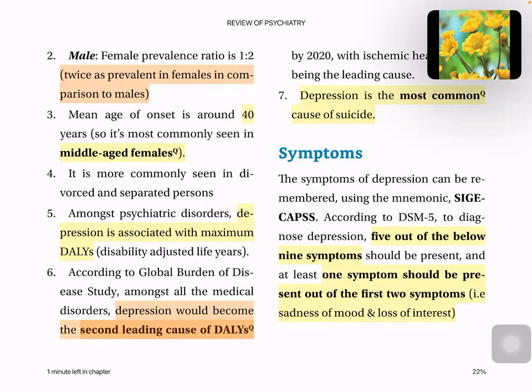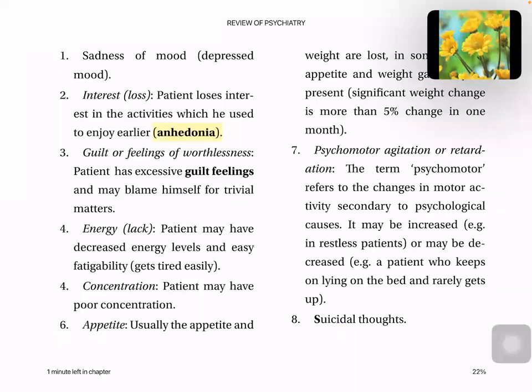Now we come to the symptoms. We have the mnemonic SIG E CAPS. According to this, five symptoms must be present, and at least one of the first two symptoms must be present. S is for sadness of mood. I is for loss of interest — the patient loses interest in activities which he used to enjoy earlier, known as anhedonia. G is for guilt or feeling of worthlessness.